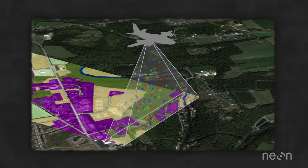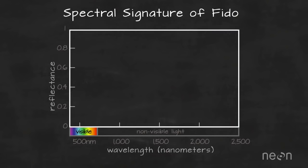The amount of light energy reflected by an object throughout the electromagnetic spectrum is called its spectral signature, which is driven by the physical structure and chemical makeup of the object.